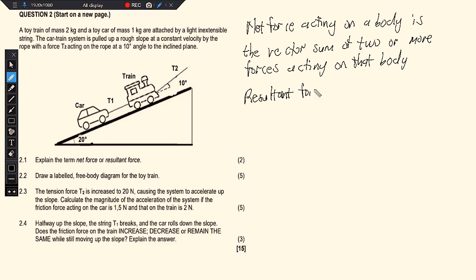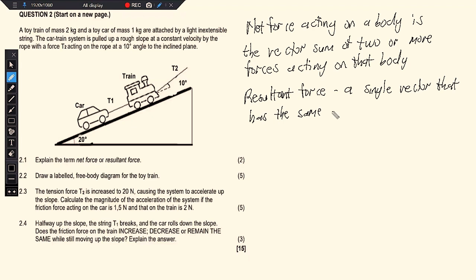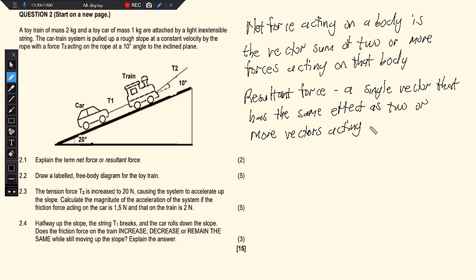Resultant force is defined as a single vector that has the same effect as two or more vectors acting together. So you can either define net force or resultant force — either way you could have got your two marks.